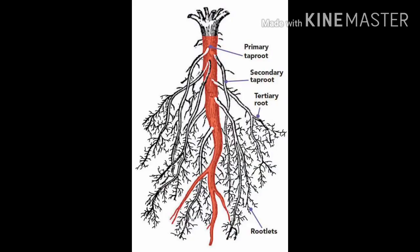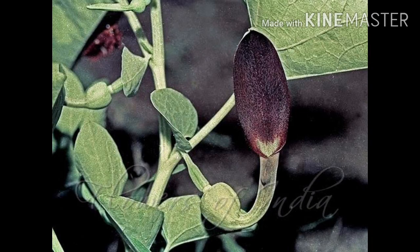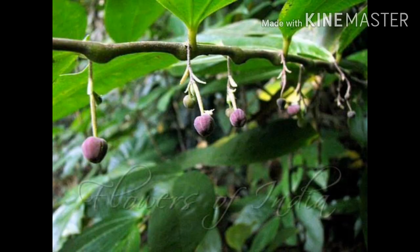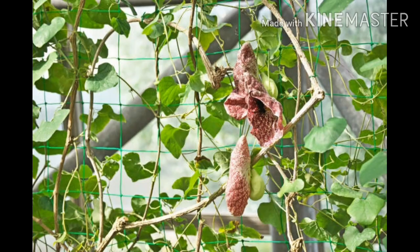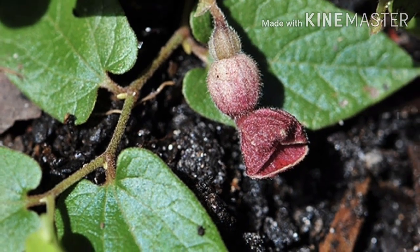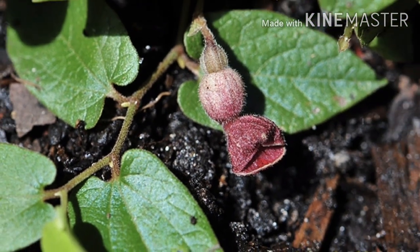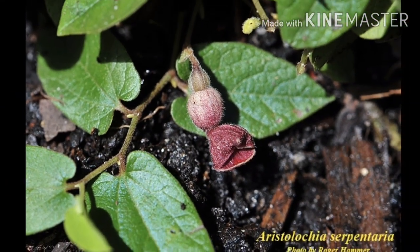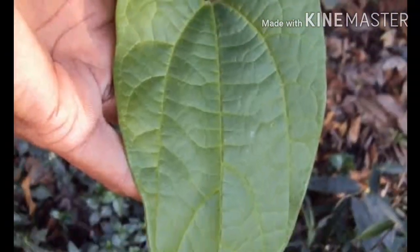The root system is a much-branched taproot system. Stems are softly woody or herbaceous, branched, twining, with broad medullary rays. Leaves are simple, exstipulate, petiolate, alternate. Oil glands are present in the leaves.